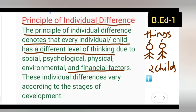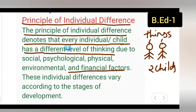Based on these factors we can differentiate individuals — one child is rich, another is poor. Individual differences vary according to the stage of development: how a child grows and in what environment they grow up, all of this shapes their individual difference.